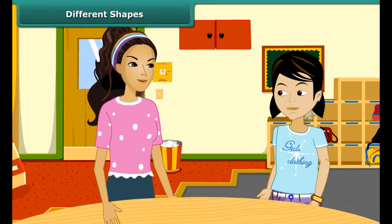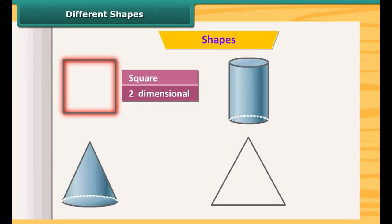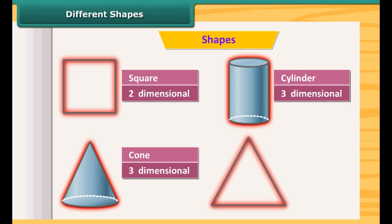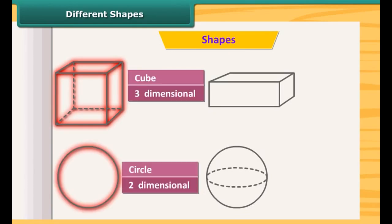Rita, let's play a game now. You know about the two-dimensional and the three-dimensional shapes. I will show you some shapes and you will tell me their name and their type. Okay, I am ready. This is a square — two-dimensional. This is a cone — three-dimensional. This is a cylinder — also three-dimensional. This is a triangle — two-dimensional.